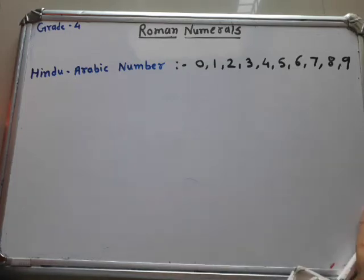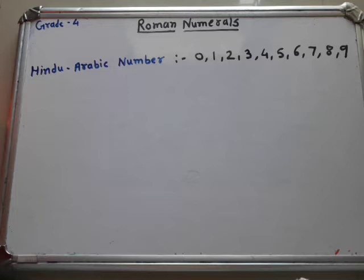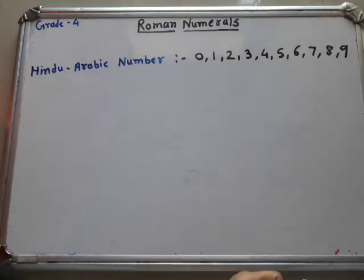Good morning students. Welcome back to our math session. In our last session we covered rounding of numbers — nearest 10, nearest 100 and nearest 1000. Today we will look at Roman numerals. You already know how to write Roman numerals from 1 to 40, as we learned these in the previous year. So today we do a revision on that again.